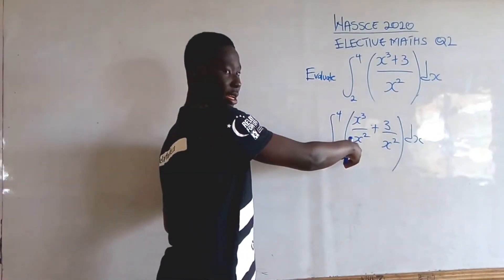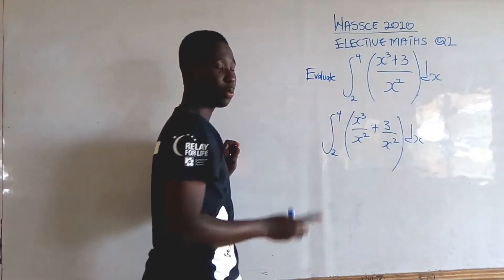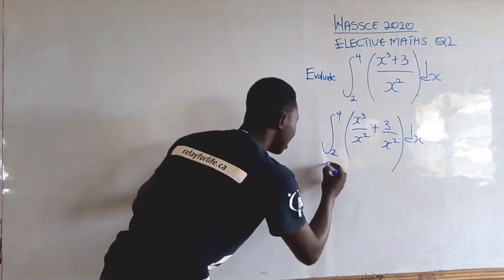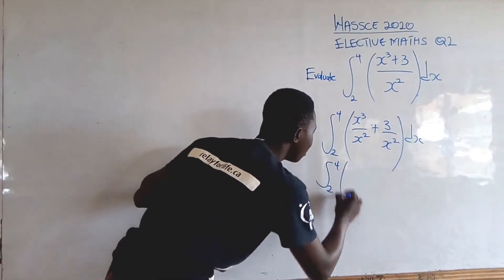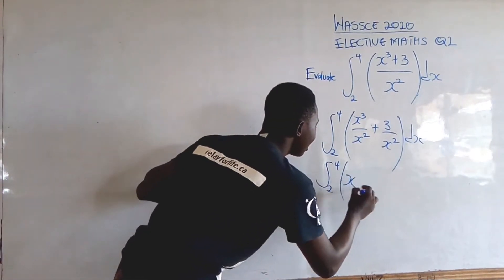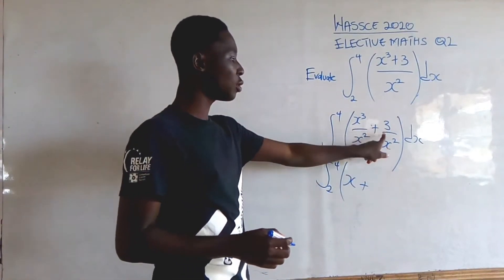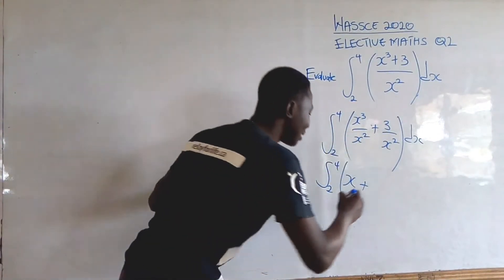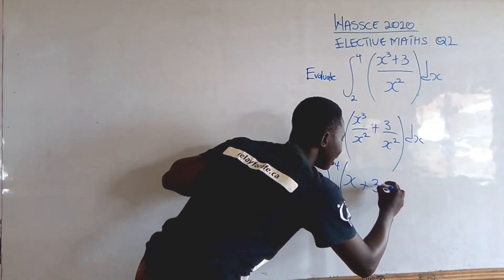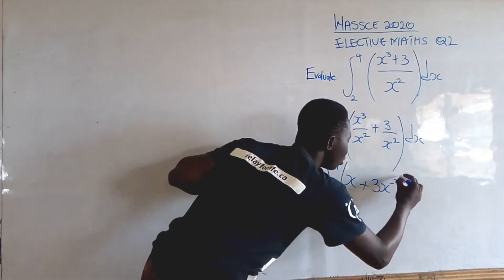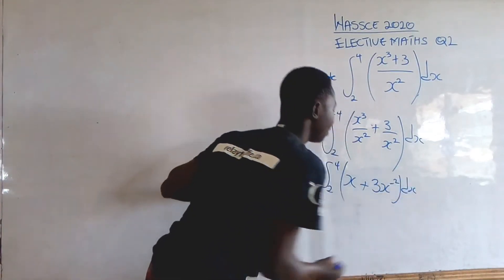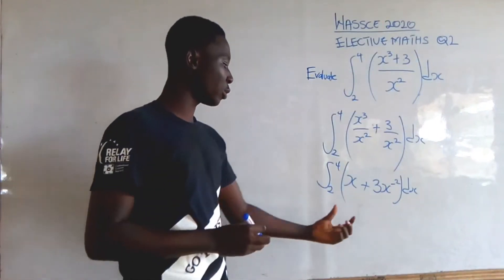So, we are going to get the integral from 2 to 4 of (x² + 3)/x². We can write this as the integral from 2 to 4 of (x² + 3) times x^(-2) dx. This is what we are having now.